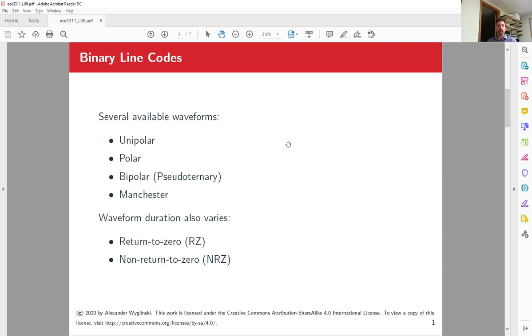Polar on the other hand is the A and minus A. Plus A amplitude level or voltage level represents a binary 1, and a negative A, a negative voltage level, represents a 0. But you also have something called bipolar or pseudoternary, which is kind of interesting.